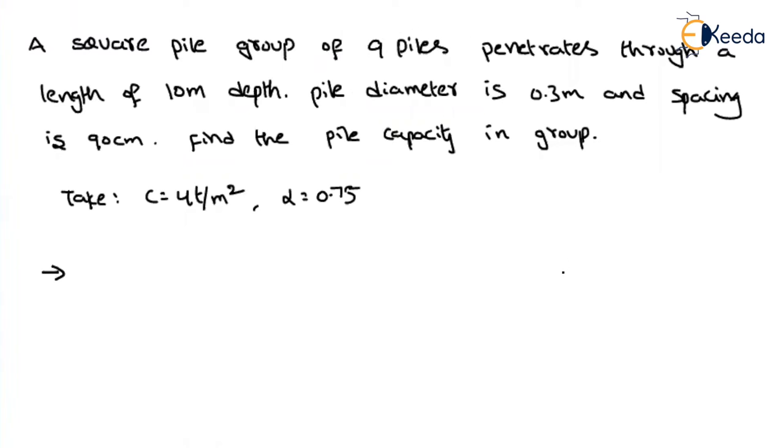How are these 9 piles arranged? They are arranged in a square group, so let us arrange these 9 piles in a square form. If you arrange in a square form, how will they look like? Along each row or